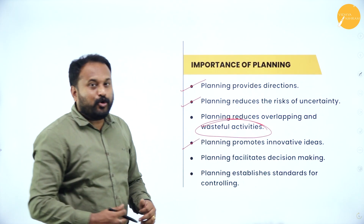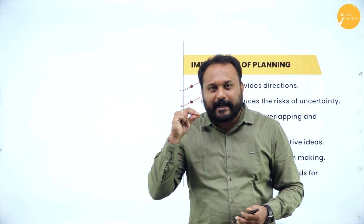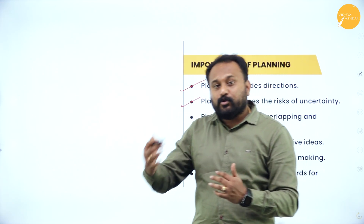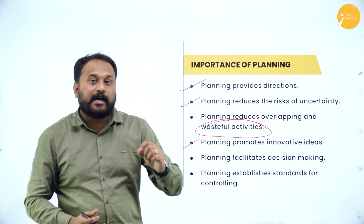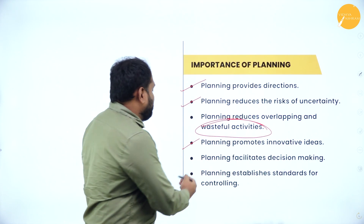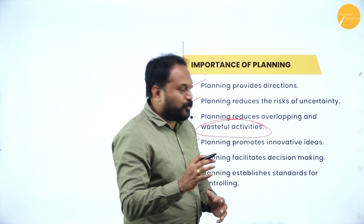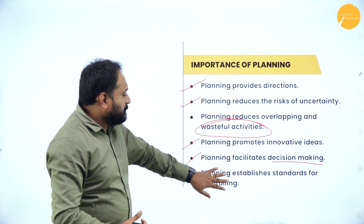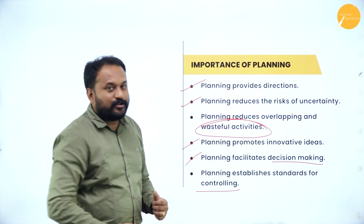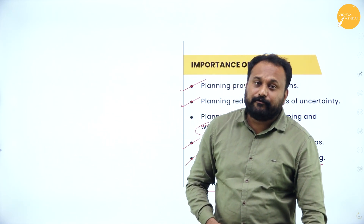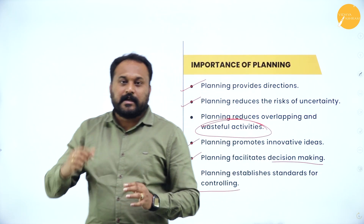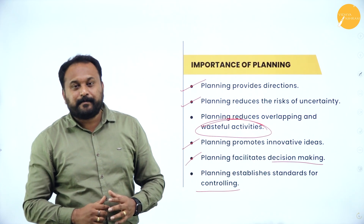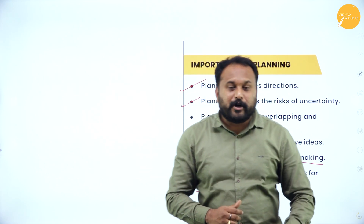Planning promotes innovative ideas — the more you plan, some other day you will get a beautiful planning structure. The more creativity and innovation happens only when you plan properly. Next, planning facilitates decision making — the majority of people plan only to make good decisions. The last point is planning establishes standards for controlling. In the controlling chapter, controlling is a process of comparing actual performance with standard performance, and to know what the standard is, we need to plan properly.